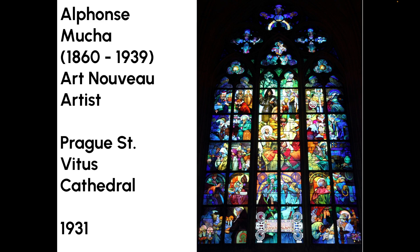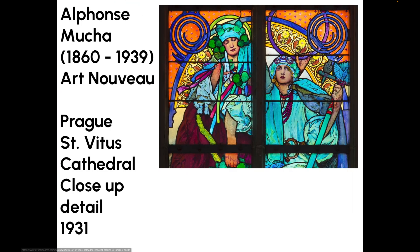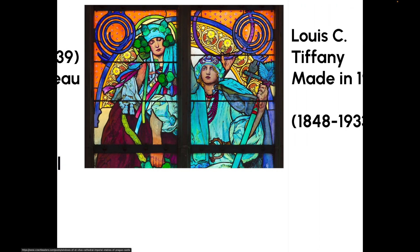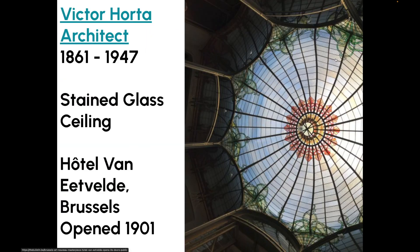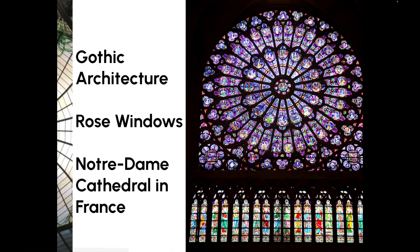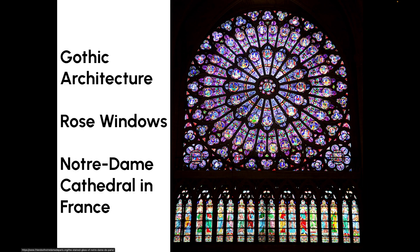Alphons Mucha made really detailed portraits. Here's the whole window from the Prague St. Vitus Cathedral from 1931, and here's an up-close detail. Louis C. Tiffany made a very realistic landscape of magnolias and irises. Victor Horta is an architect who created a stained glass ceiling in a hotel — it gives very luxurious hotel vibes. Gothic architecture often features rose windows, like the Notre Dame Cathedral in France.